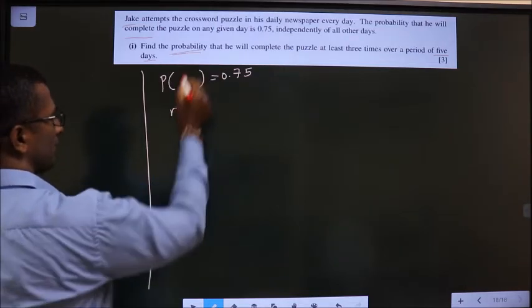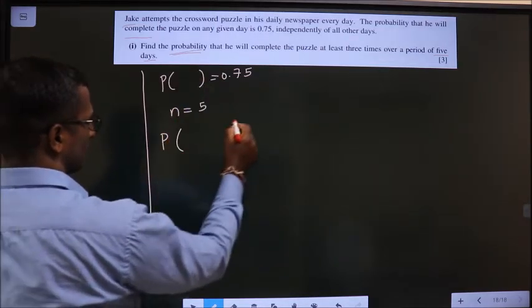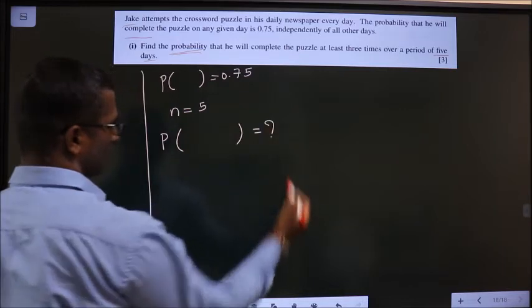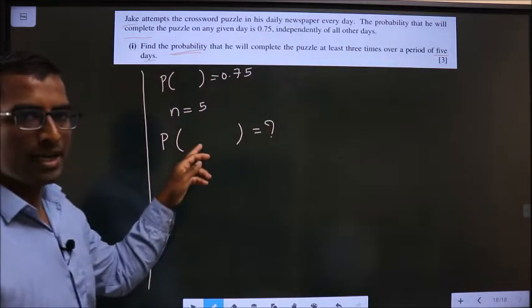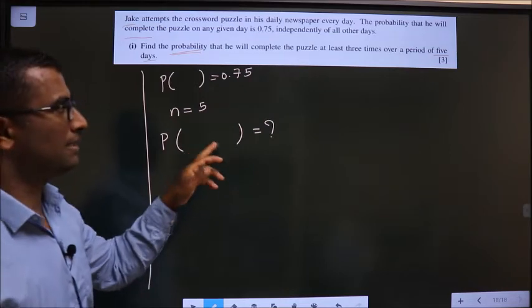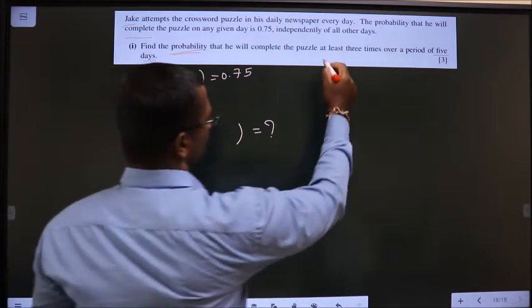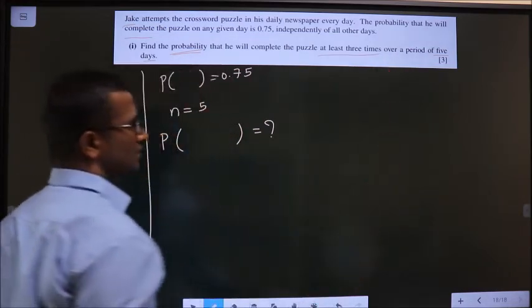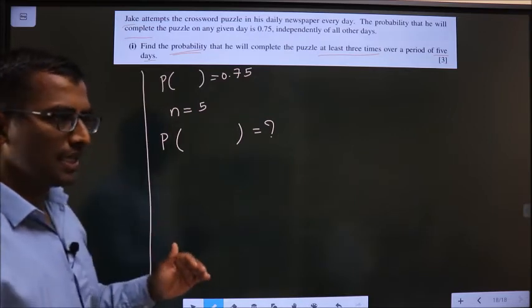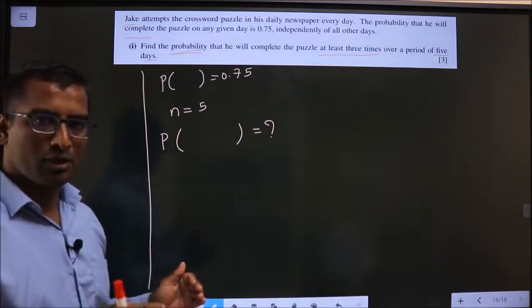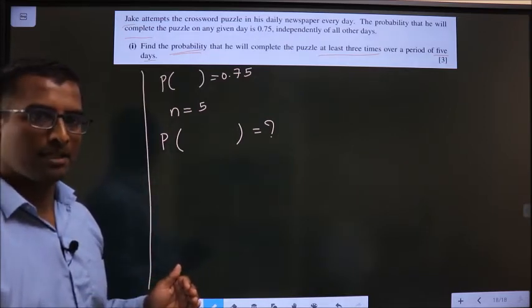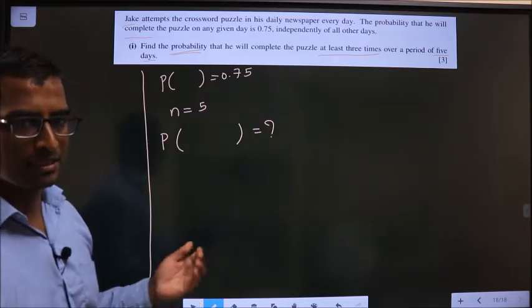You need to find the probability. Now probability of what condition will be decided by this: at least 3 times means 3 or more than that.